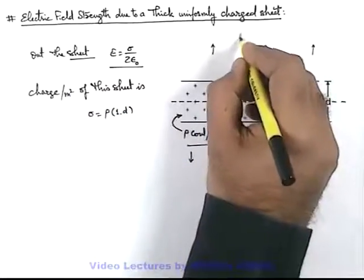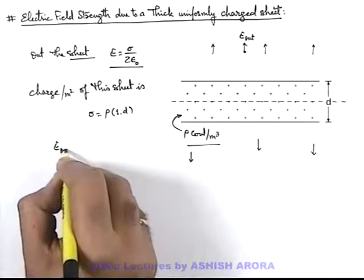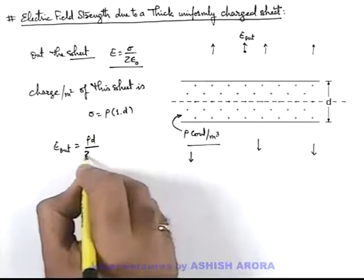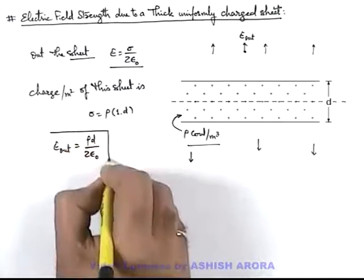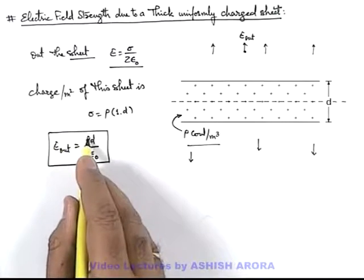So on substituting outside electric field, E_out can be written as - here we can write σ as ρd then it'll be ρd by 2ε₀ - this is the electric field outside a thick sheet having charge density ρ and thickness d.